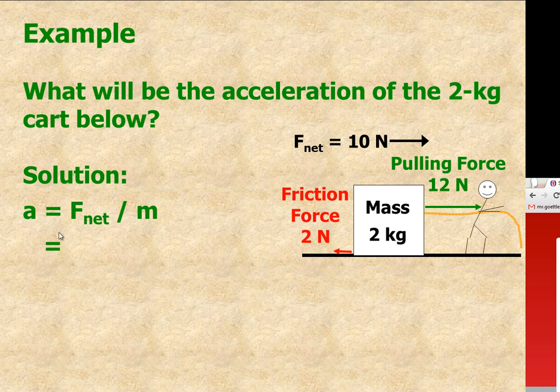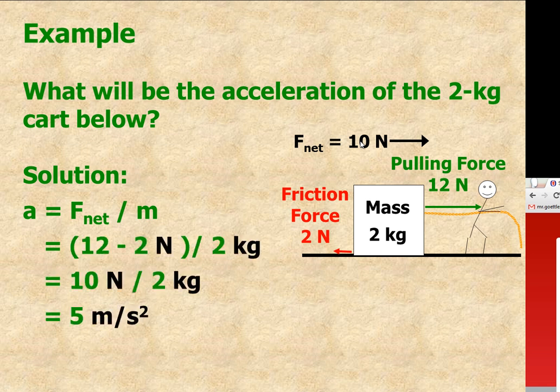First, we find the net force acting on it. And so we can see the net force is going to be 10 Newtons to the right after we subtract 12 from 2. And then we divide that 10 Newtons by 2 kilogram mass, and we get 5 meters per second squared of acceleration. So we'll get faster by 5 meters per second each second.